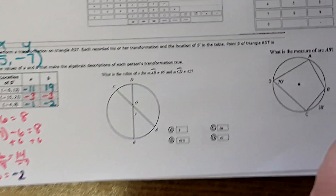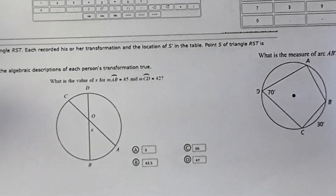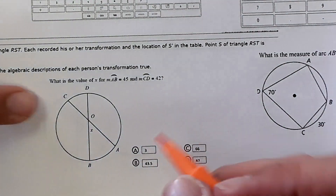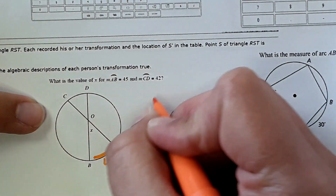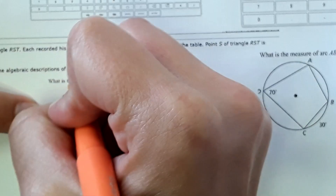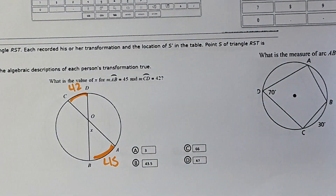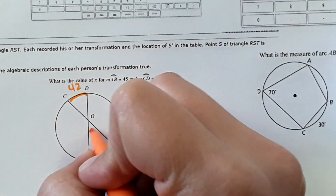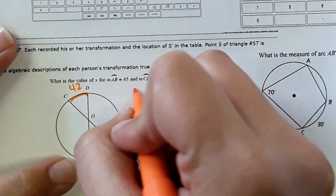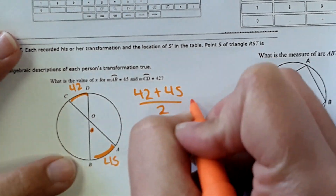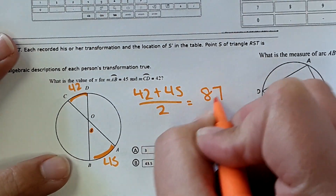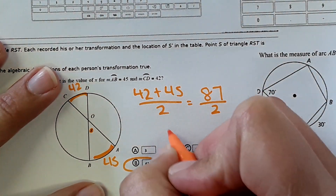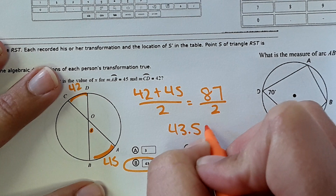Circle theorems: what is the value of x if arc AB is 45 degrees and arc CD is 42 degrees? This angle is actually the average of the two arcs, so you do 42 plus 45 divided by 2. That gives 87 divided by 2, and looking at the answer choices it must be 43.5 degrees.